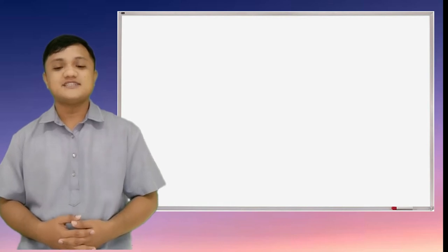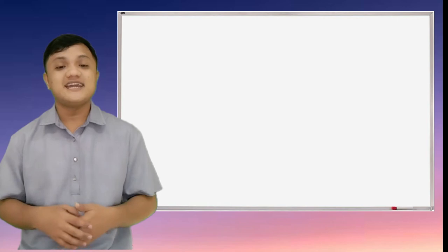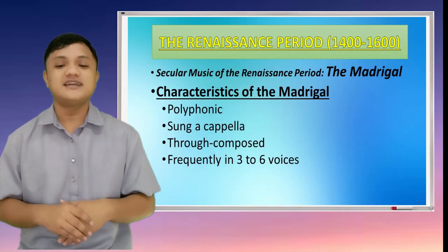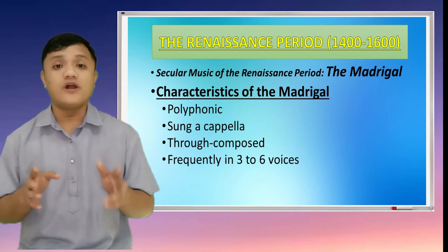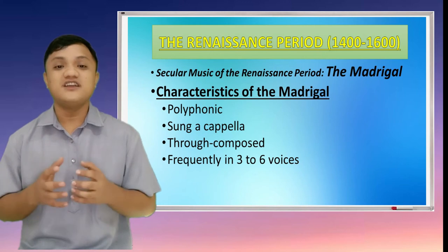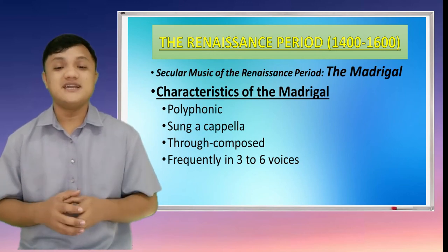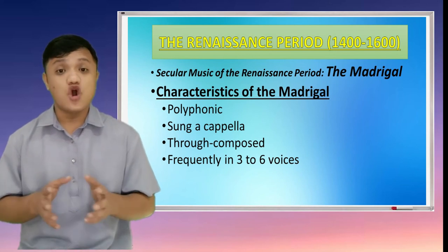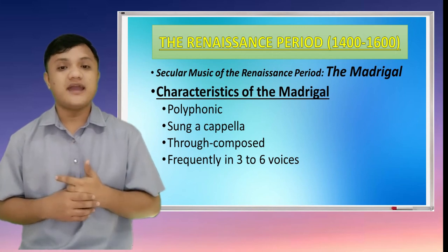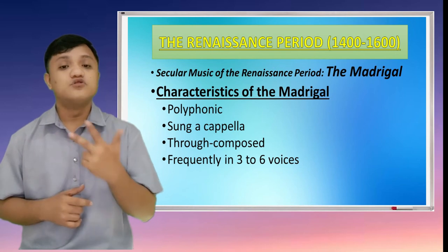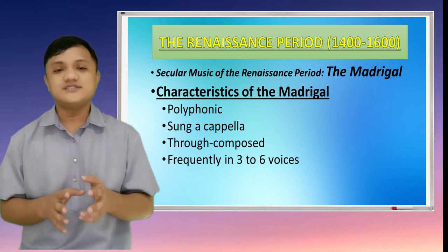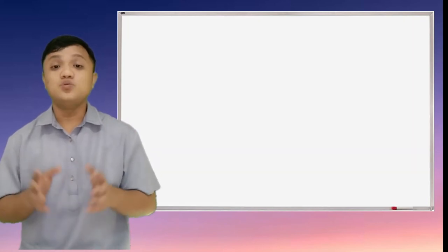After the church music, let us now go to the secular music of the Renaissance period — the Madrigal. Are you familiar with the Madrigal singers of the University of Santo Tomas? The characteristics of Madrigals are: Number 1, it is polyphonic. Number 2, sung a cappella — meaning no accompaniment. Number 3, through-composed. And number 4, frequently in three to six voices.